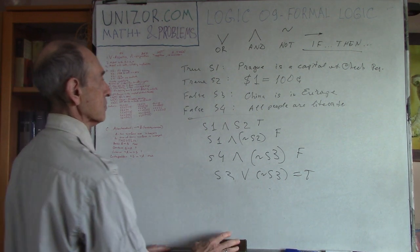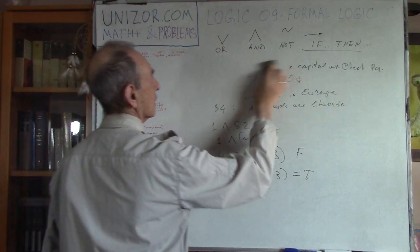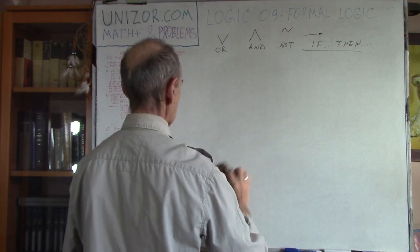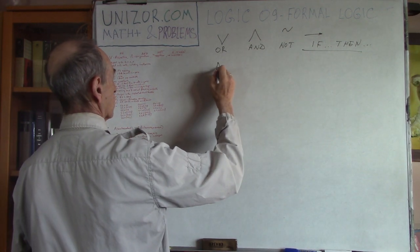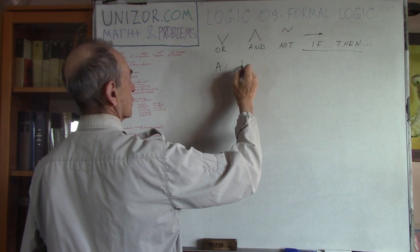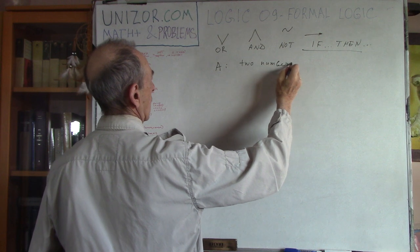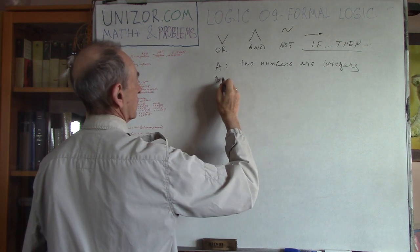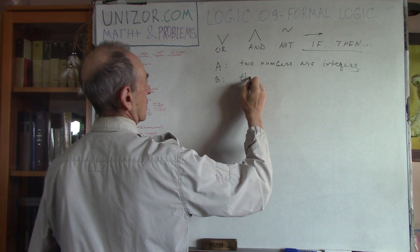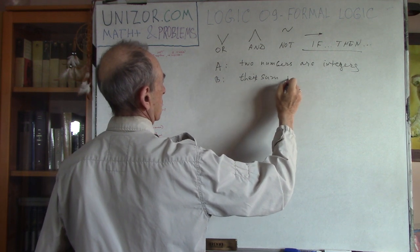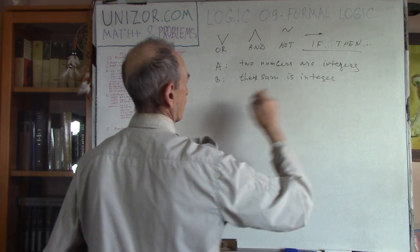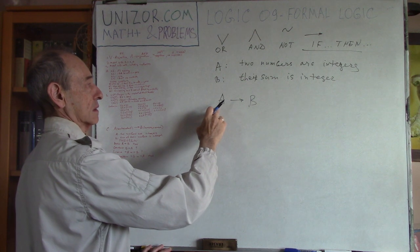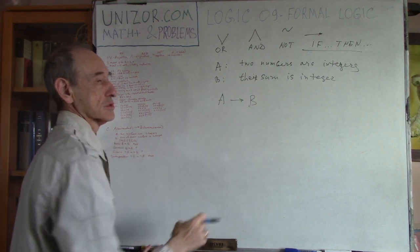The last problem is about theorems. Theorems are usually implications — if-then statements. First statement A: two numbers are integers. Statement B: their sum is an integer. If two numbers are integers, then their sum is an integer — that's definitely true. This is a basic theorem.